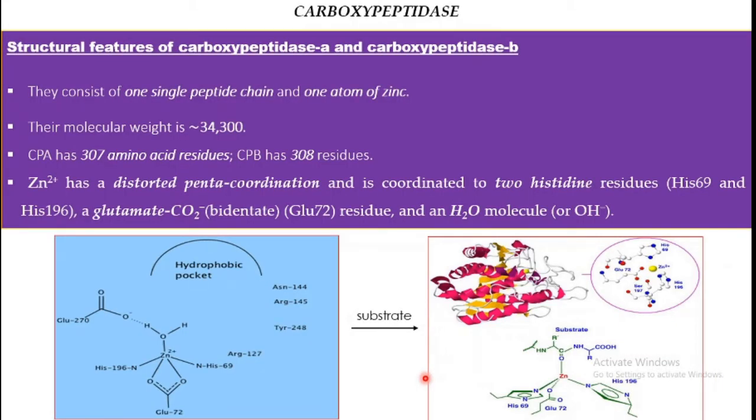Regarding the structural features of carboxypeptidase A and B, they both constitute one single peptide chain, and each carboxypeptidase has one zinc atom inside it. This zinc atom is coordinated by the amino acid residues present inside the carboxypeptidase and has pentacoordination, meaning five coordination sites.